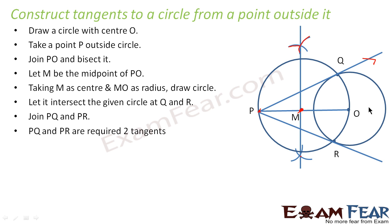Very simple, what you have to do? Just remember the steps. Circle, point outside it. Join this PO, bisect it. Now from this point, draw a circle. The moment it draws a circle, it will meet this at two points. You join these two points. That's it. And there are two tangents. Very simple, just remember the steps.